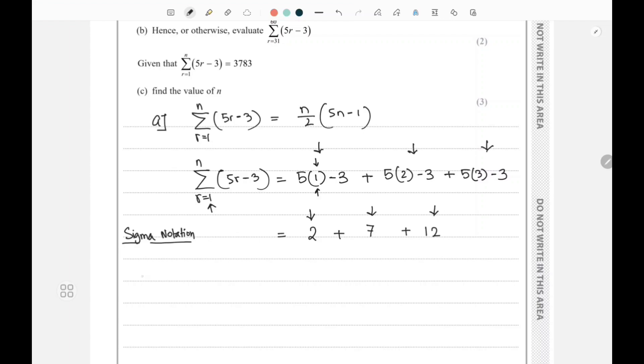So I can clearly see the first term is 2, second term is 7, third term is 12. For the first term, a equals 2. The common difference formula is t2 minus t1, so my t2 is 7 and my t1 is 2, so I get the common difference as 5.